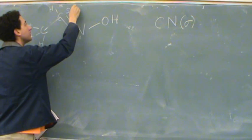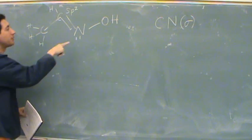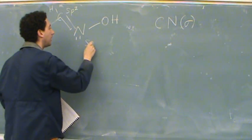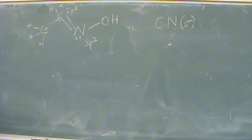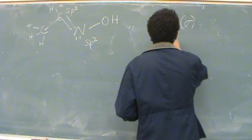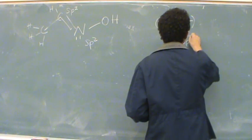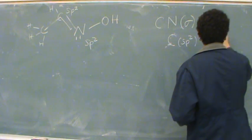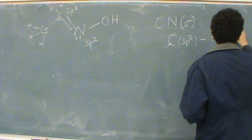Sp2. Sp2. What's the hybridization of the nitrogen? Also sp2. So whenever a sigma bond occurs, the hybridized orbitals overlap. So in this case, it's the carbon sp2 hybridized orbital overlapping with the nitrogen sp2 hybridized orbital.